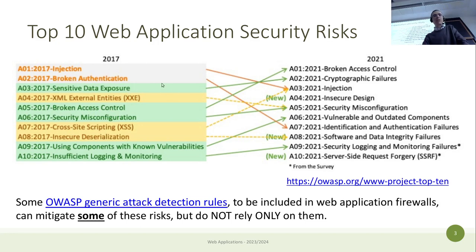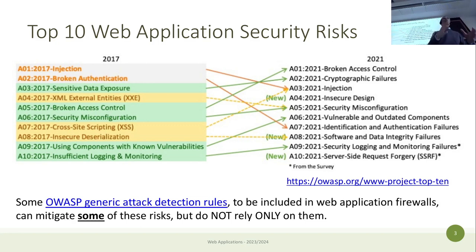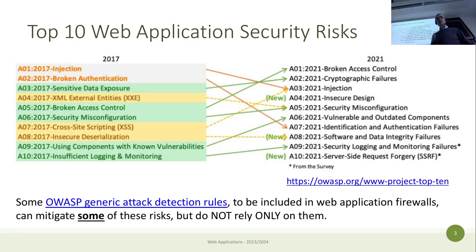Some issues also go down in the list, like authentication — maybe because good frameworks came out and people started using well-maintained packages and libraries that are easy to use. If you follow the guidelines and use good libraries, you solve most of the problems. Things evolve over time as in any other research field.